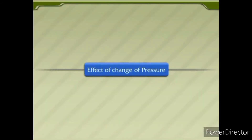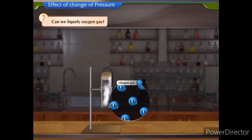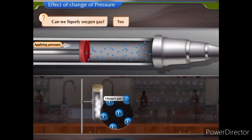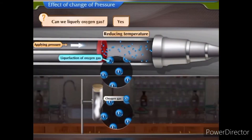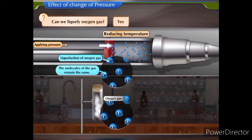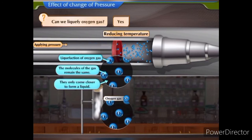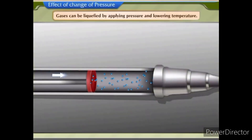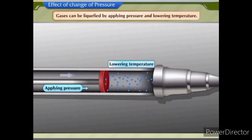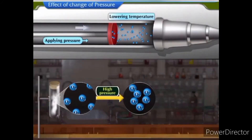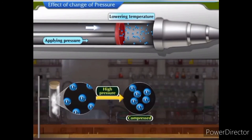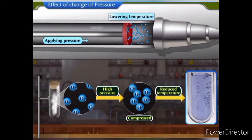Effect of change of pressure. Can we liquefy oxygen gas? Yes. By applying pressure and reducing temperature, we can liquefy oxygen gas. The molecules of the gas remain the same — they only come closer to form a liquid. Gases can be liquefied by applying pressure and lowering temperature. When a high pressure is applied to a gas, it gets compressed and if the temperature is lowered, the gas is liquefied.